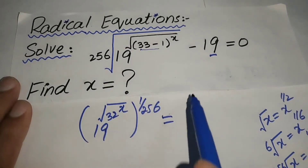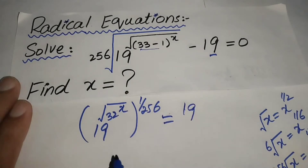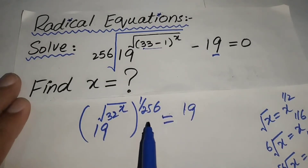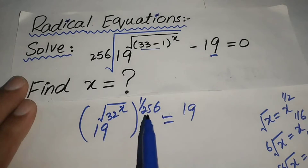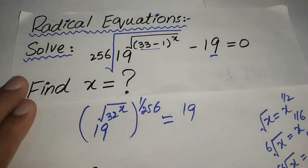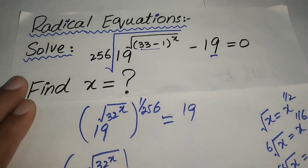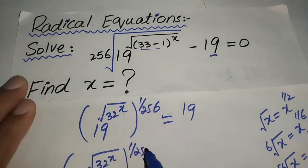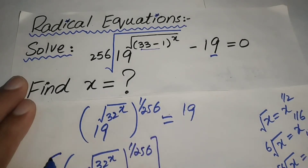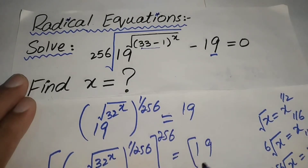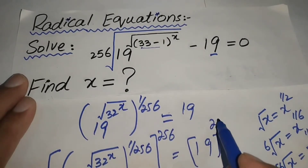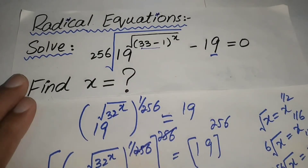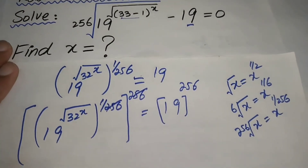We take 19 to the right hand side. After that, we take the power of 256 on both sides to eliminate the power of 1 over 256. So we raise both sides to the power of 256 in this form.